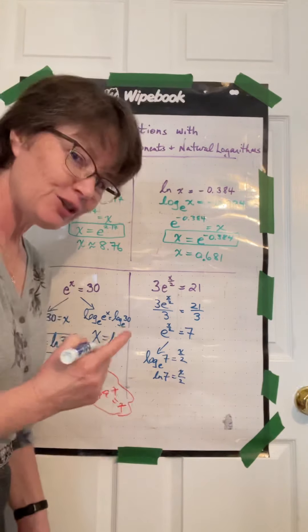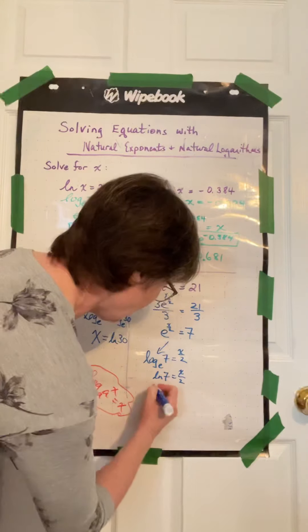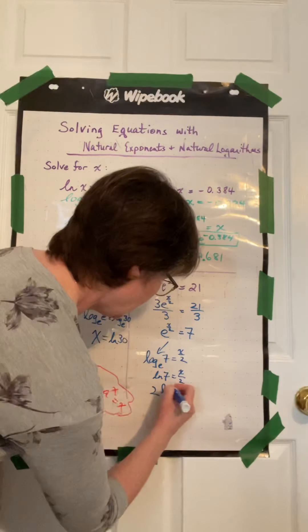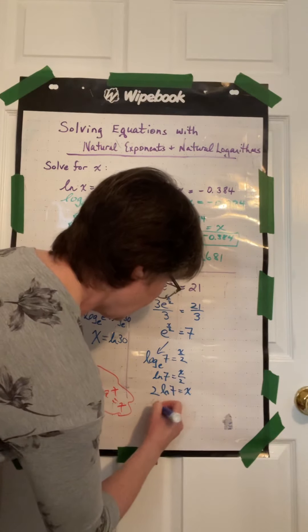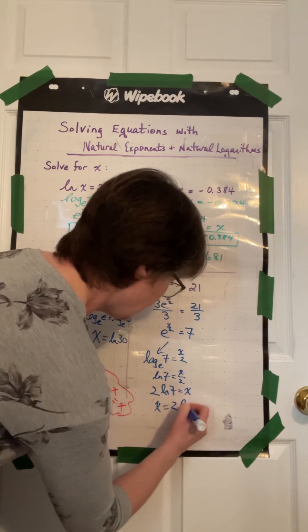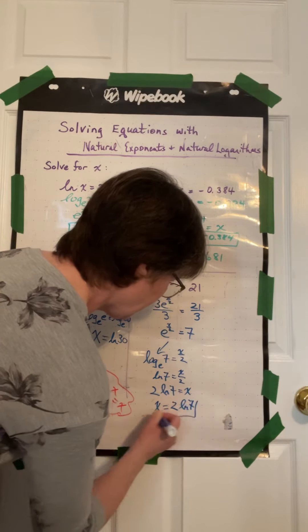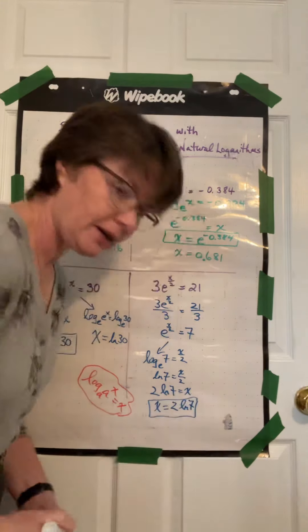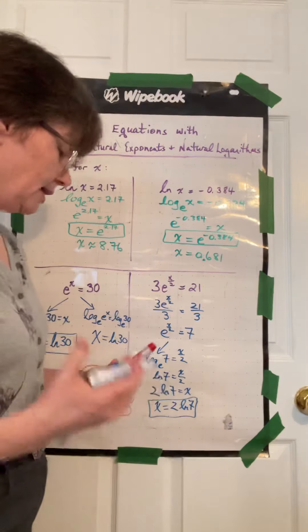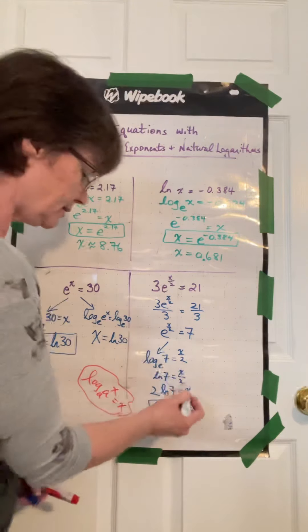Multiply both sides by 2. And we have 2 ln 7 equals x. And that is our final answer. Again, you can poke that in your calculator and see what approximate number that is, but this is an exact answer.